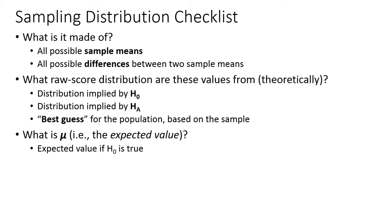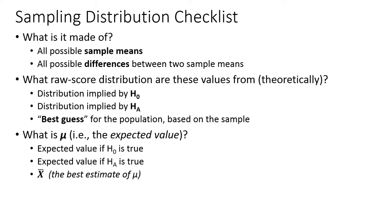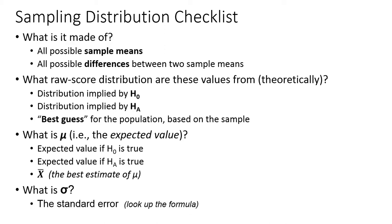The expected value might be if the null hypothesis is true, or if the alternative is true, or it could just be the sample mean. For confidence intervals, we just say it's the sample mean. The standard deviation of this distribution is always the standard error — there's always a formula, so just know the formula.